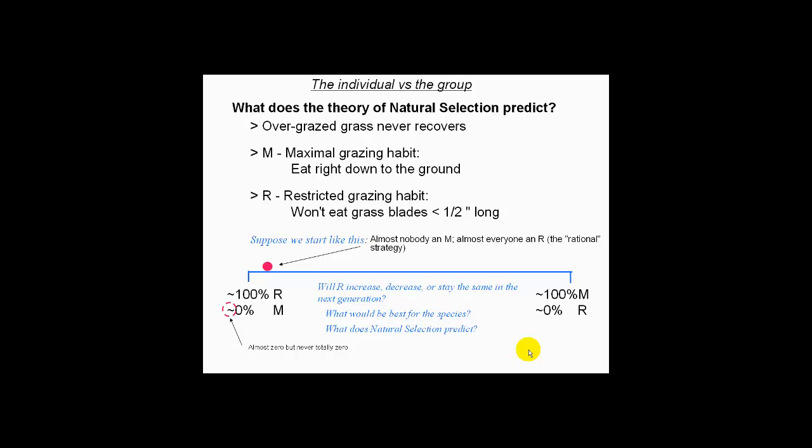Now, I'm going to make a lot of scales like this in these lectures. In this example, and in most examples we'll talk about, we have two alternative possibilities — it's either one or the other. At one extreme we have 100% restricted grazers and 0% maximal grazers; on the other end, 100% maximal grazers and 0% restricted grazers. When I say 0%, I don't really mean absolutely zero — I mean almost zero, because once the gene dies out totally you'd have to wait for a new mutation. So when I say 0%, I just mean almost everybody is the other thing, but not quite.